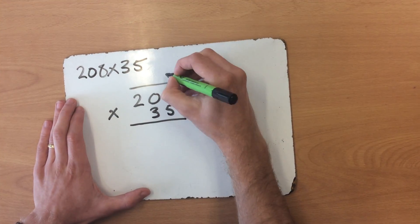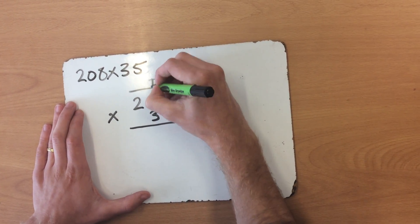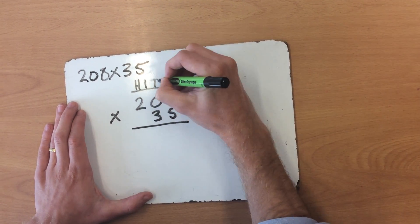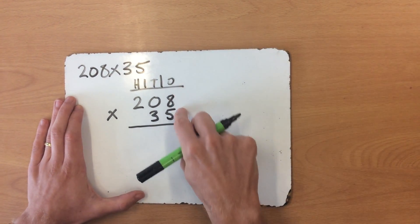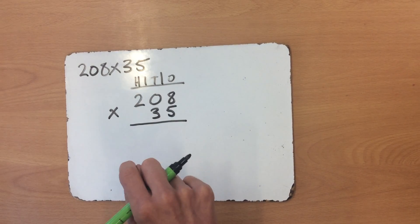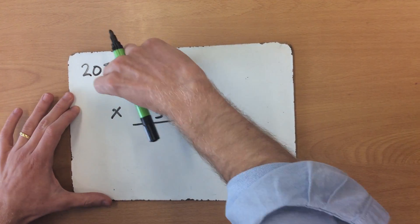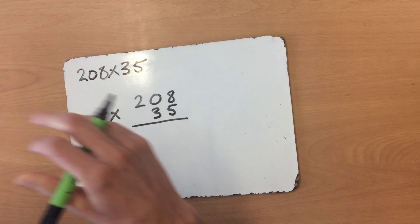So if I just do a little label on top here, I've got my ones, my tens, and my hundreds. The first thing to solving these calculations is just making sure your place value is in the correct place.